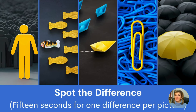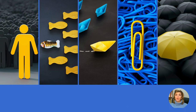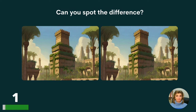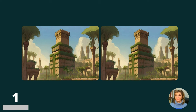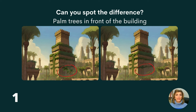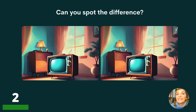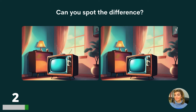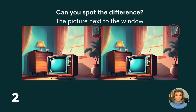Let's start with spot the difference. You have 15 seconds for one difference per picture. And we have the palm trees in front of the building — that is the difference. Question two, and the picture next to the window is the difference.